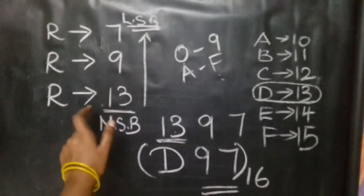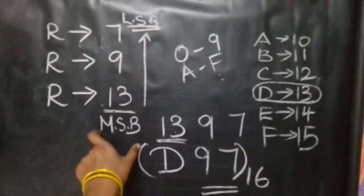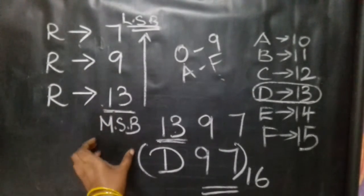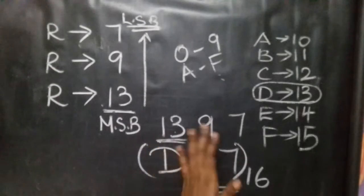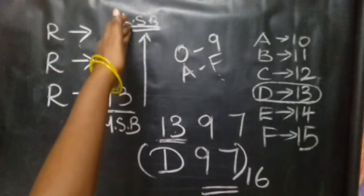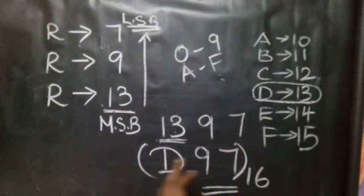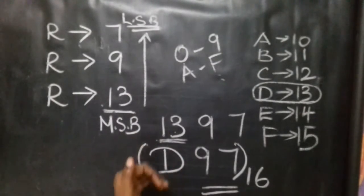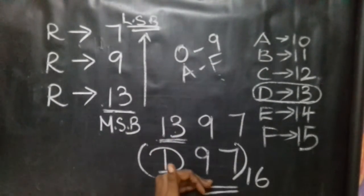When you write the answer, you write from last to first. The last quotient is the most significant bit (MSB), and the first remainder is the least significant bit (LSB). So the answer is D, 9, 7.